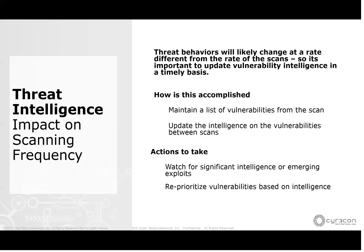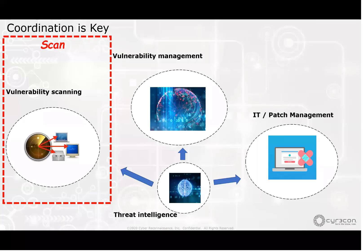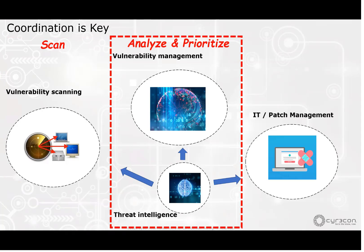Note that you're reprioritizing not based on a new scan, but based on new intelligence. With all of these approaches, coordination is key. If you change the frequency and cadence of your scanning, it will have a ripple effect through your entire vulnerability management program. If you're scanning less frequently, that's actually an opportunity to increase the frequency of your intelligence analysis.